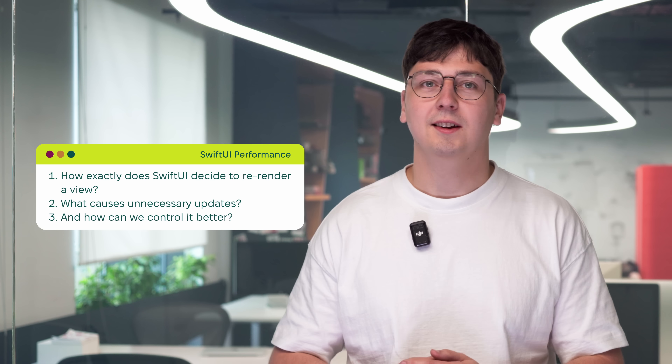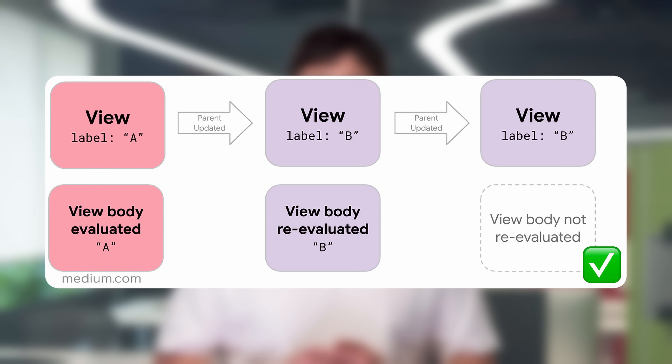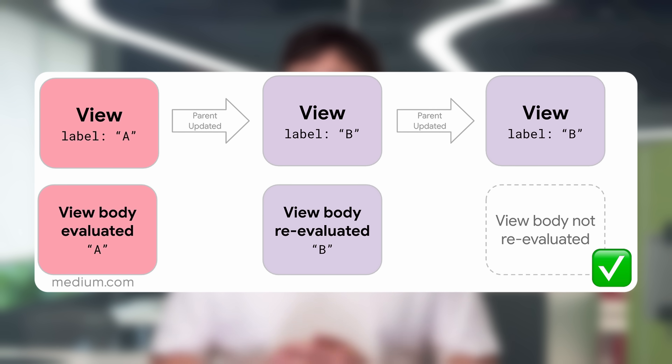What causes unnecessary updates, and how can we control it better? In an ideal world, SwiftUI only re-renders a view when the data it depends on actually changes. But reality is a bit messier. SwiftUI uses a reflection-based mechanism to diff your views — checking equatable types by value, reference types and closures by identity, and structs recursively, property by property. The real troublemakers: closures and structs that hold references to classes. This breaks SwiftUI's diffing logic, triggering unnecessary re-renders.